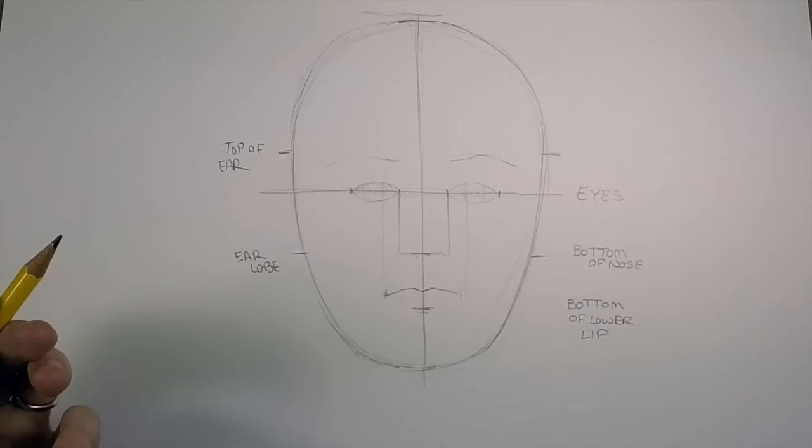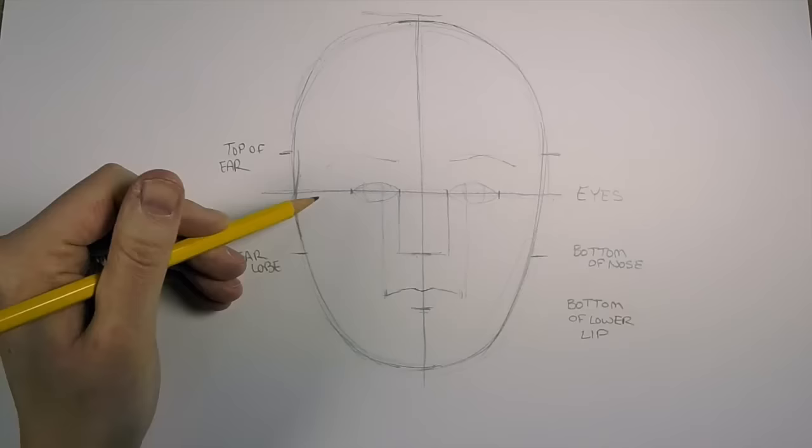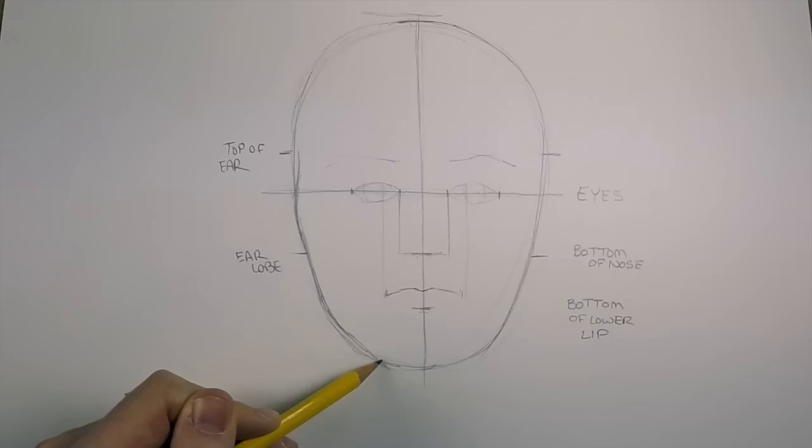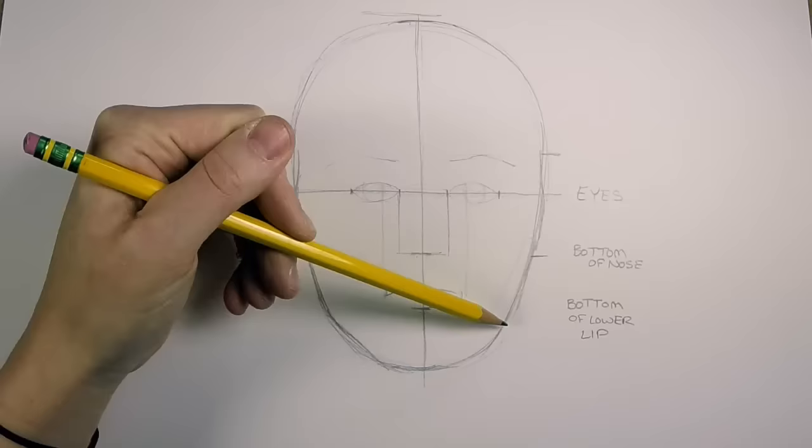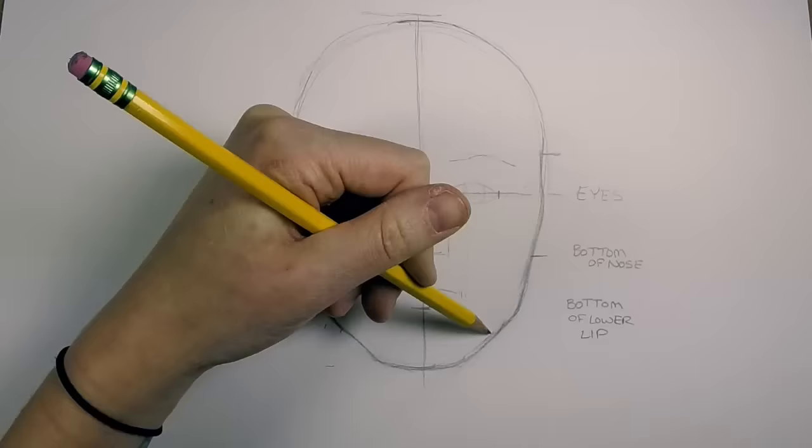What we're going to do next is talk about the jawline a little bit, because that is important and it helps us figure out where the rest of our features go. Usually around our eyebrows is kind of where our temple is, and then our cheekbones are just slightly below our eyes. Face shapes are very different depending on the person—you could have a rounder face, you could have a very angular face, and if you're male or female that also makes a big difference in how strong your jawline is.